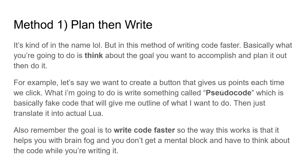The first method is: plan, then write. Basically, you're going to think about what you want to accomplish — the goal of your script. For example, let's say we want to create a button that gives us points each time we click it. What you're going to do is write something called pseudocode, which is basically fake code that gives you an outline of what you want to do.